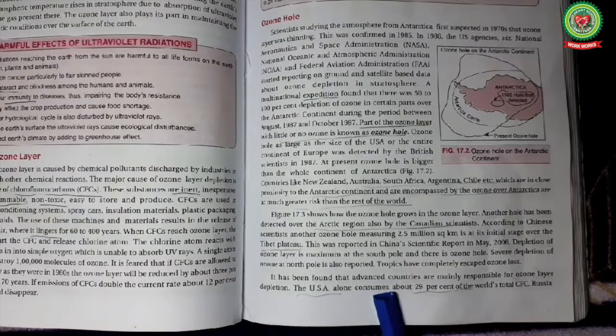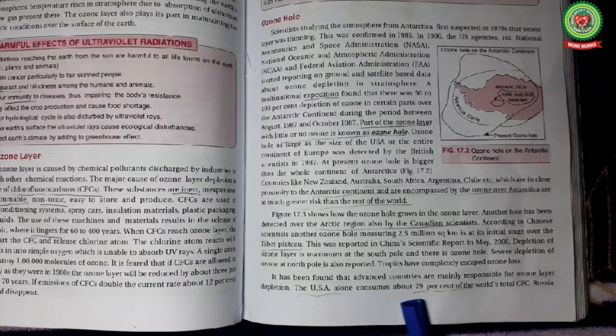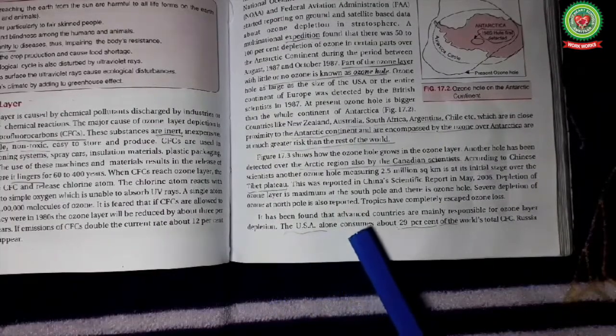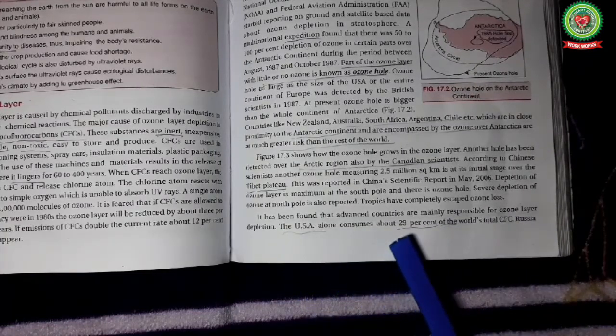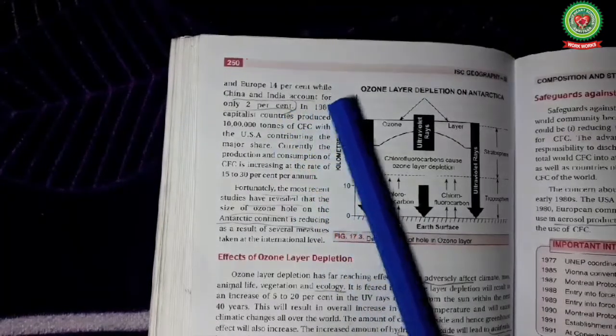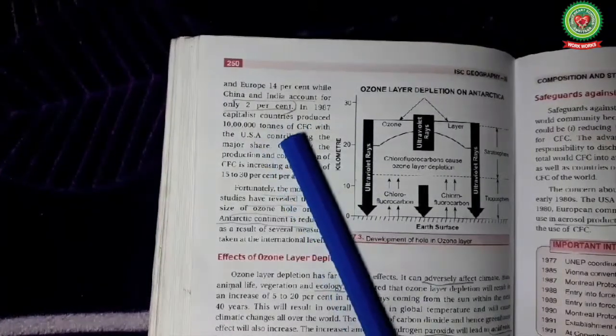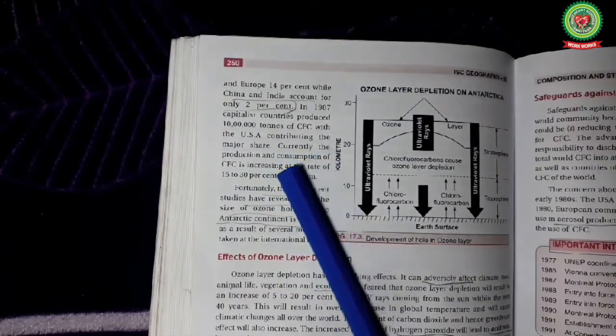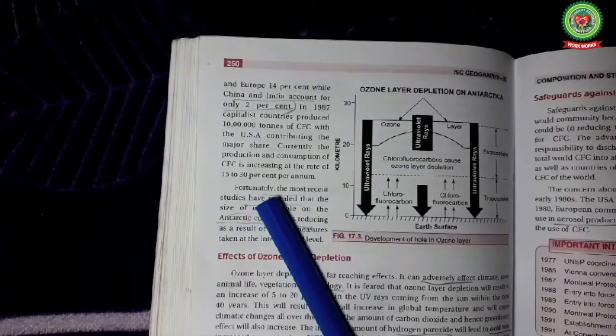It has been found that advanced countries are mainly responsible for ozone layer depletion. The USA alone consumes about 29% of the world's total CFC. Russia and Europe 14%, while China and India accounts for only 2%. In 1987, the capitalist countries produced 10 lakh tons of CFC with the USA contributing to the major share. Currently production and consumption of CFC is increasing at the rate of 15-30% per year.